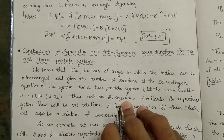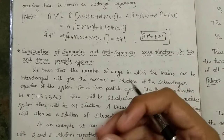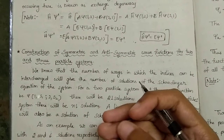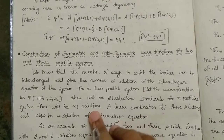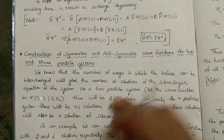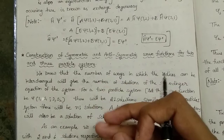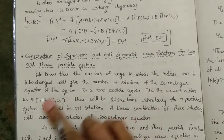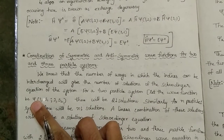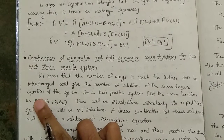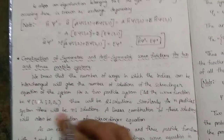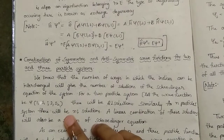There will be two factorial solutions — the number of ways we can interchange. If ξ(1,2) is a wave function, we can interchange it as ξ(2,1), so there are two factorial ways. Here ξ(1, s1) takes into consideration the position of the particle as well as the spin of the particle — the space part and the spin part — and both must be taken into consideration.